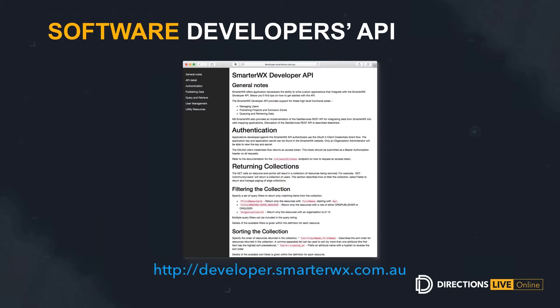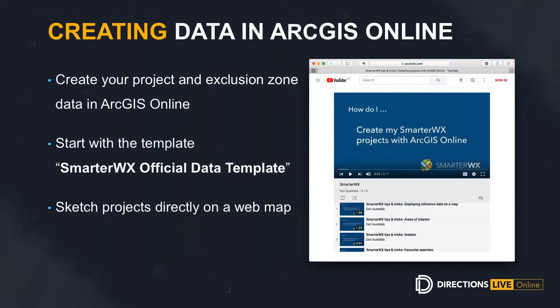Something that's not necessarily new but has been asked for is easier ways to create data. I want to point out a helpful video produced around creating SmarterWorks projects with ArcGIS Online. Following this simple guide — about five or six minutes — it shows you how to use ArcGIS Online to take a data template for SmarterWorks, sketch out your projects and exclusion zones, and export that for adding into SmarterWorks. For anyone looking for easier ways to manage project data, please do take a look at this video.